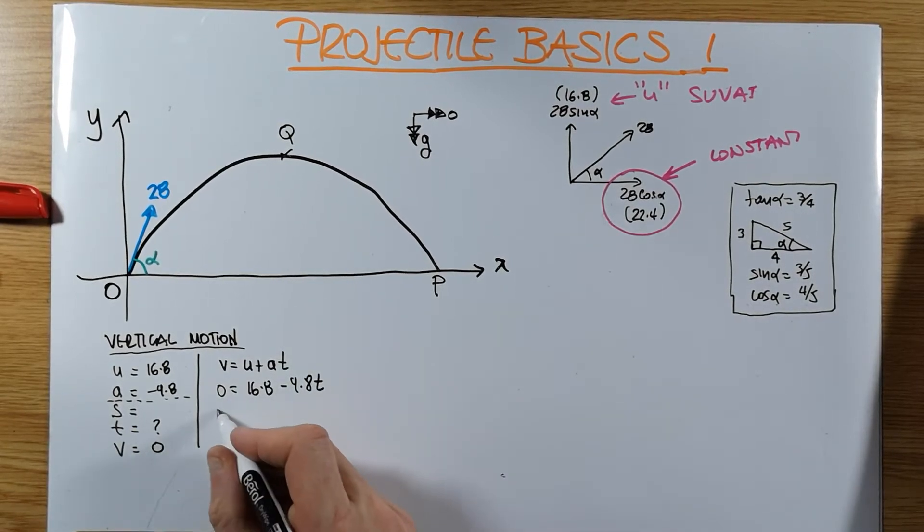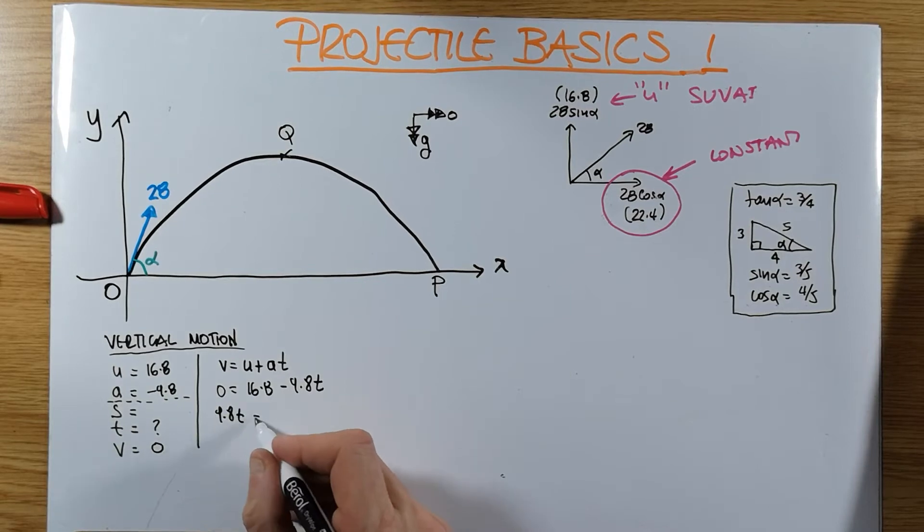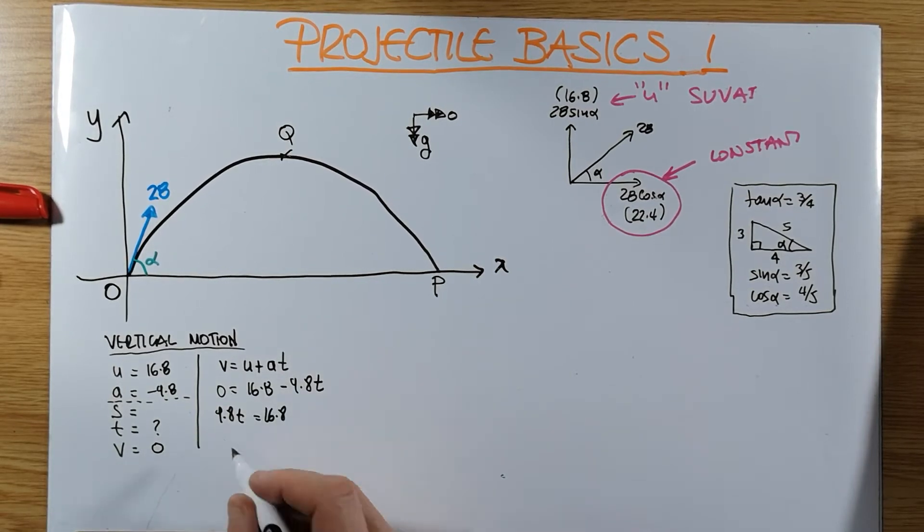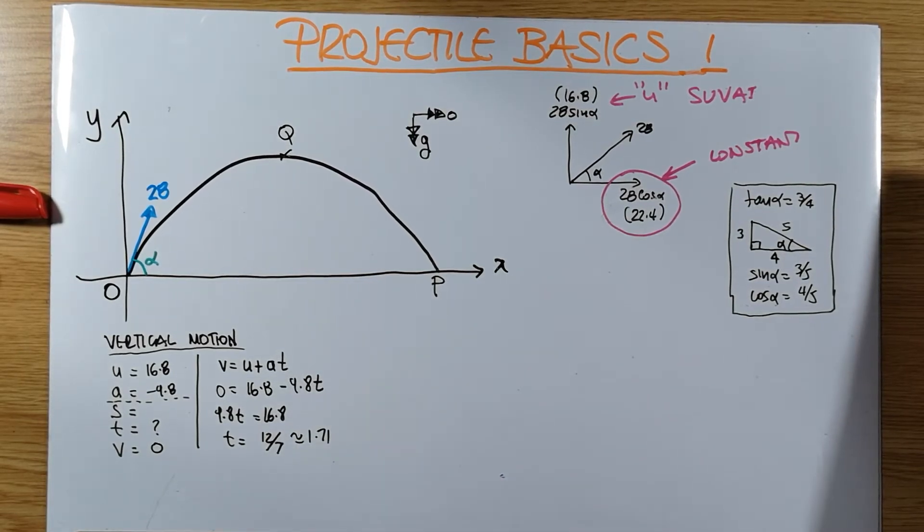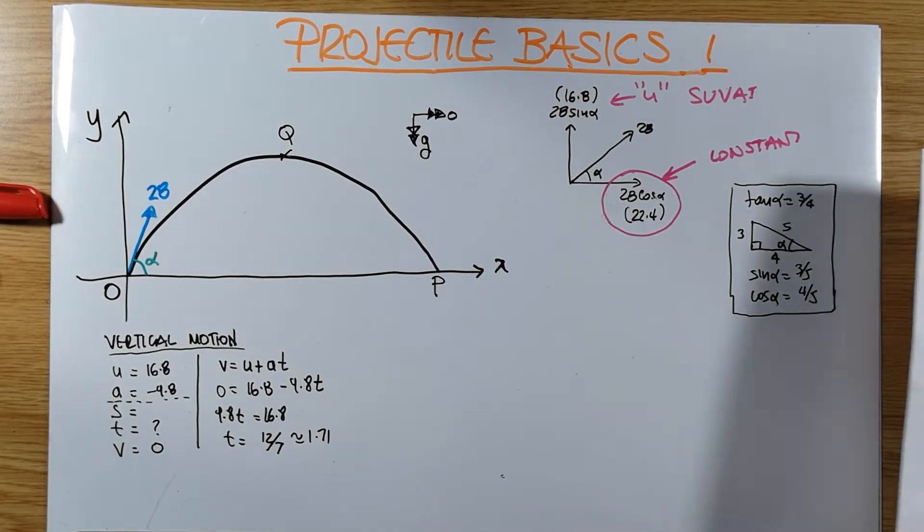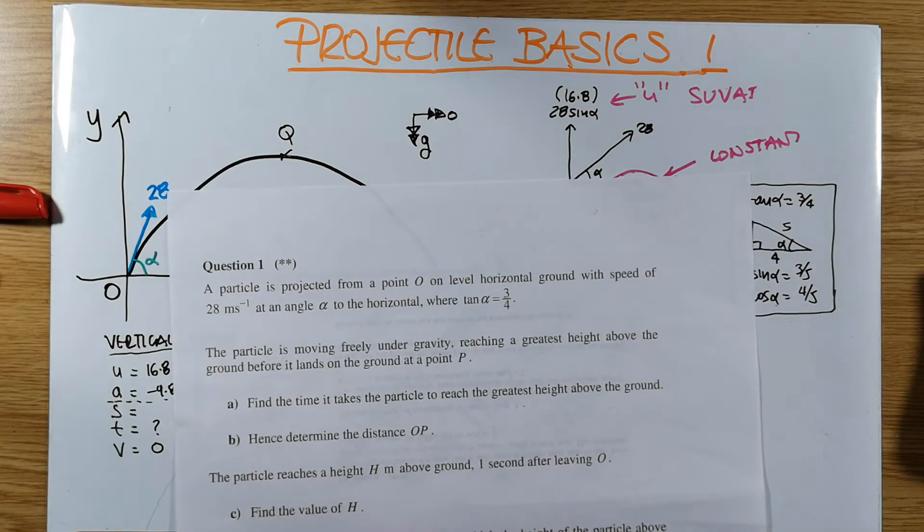Very simple equation. V is equal to U plus AT. Zero is equal to 16.8 minus 9.8T. Rearrange it. 9.8T is equal to 16.8. And T will be, for this particular one, 12 over 7. And 12 over 7, using my calculator, is approximately 1.71. So that is the first part of the problem. That's the time it takes to reach the greatest height above the ground.